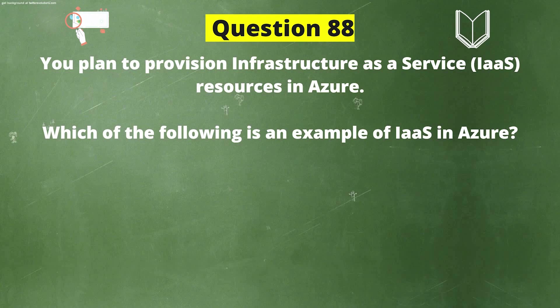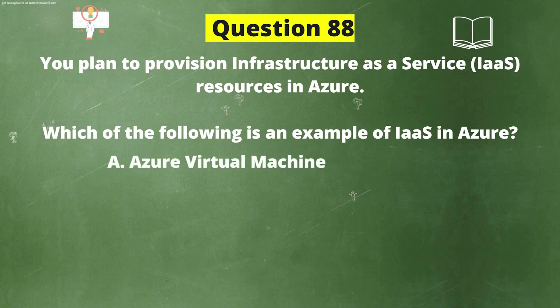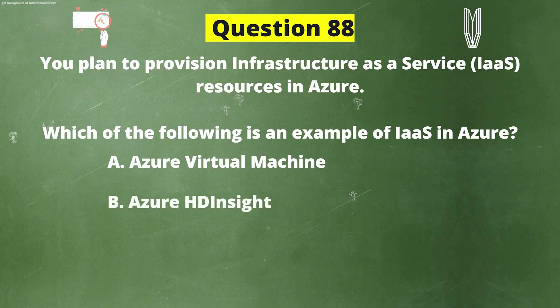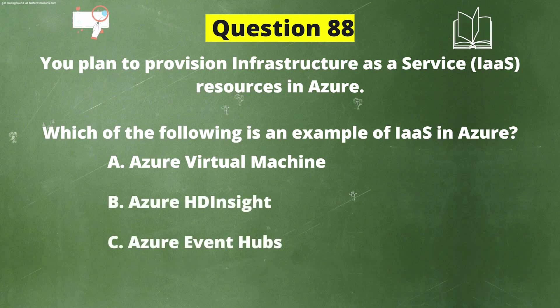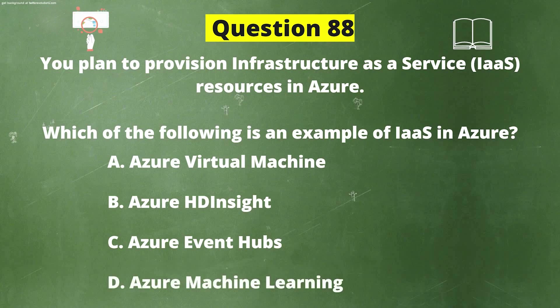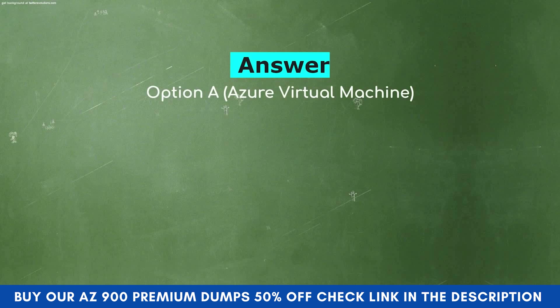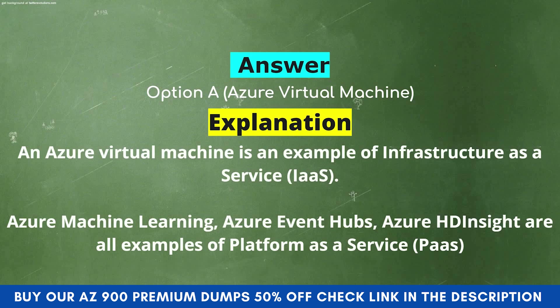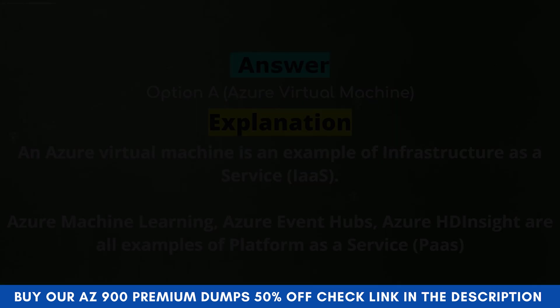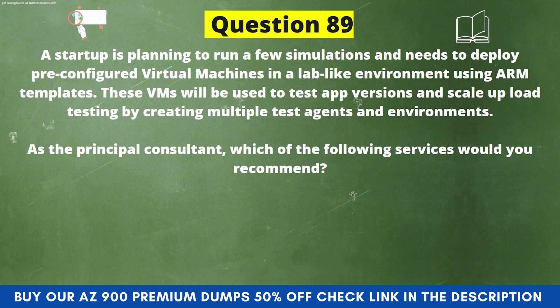Next question: You plan to provision Infrastructure as a Service (IaaS) resources in Azure. Which of the following is an example of IaaS in Azure? Option A: Azure Virtual Machine. Option B: Azure HDInsight. Option C: Azure Event Hubs. Option D: Azure Machine Learning. The correct answer is Option A, Azure Virtual Machine. Explanation: An Azure Virtual Machine is an example of IaaS. Azure Machine Learning, Azure Event Hubs, and Azure HDInsight are all examples of Platform as a Service (PaaS).